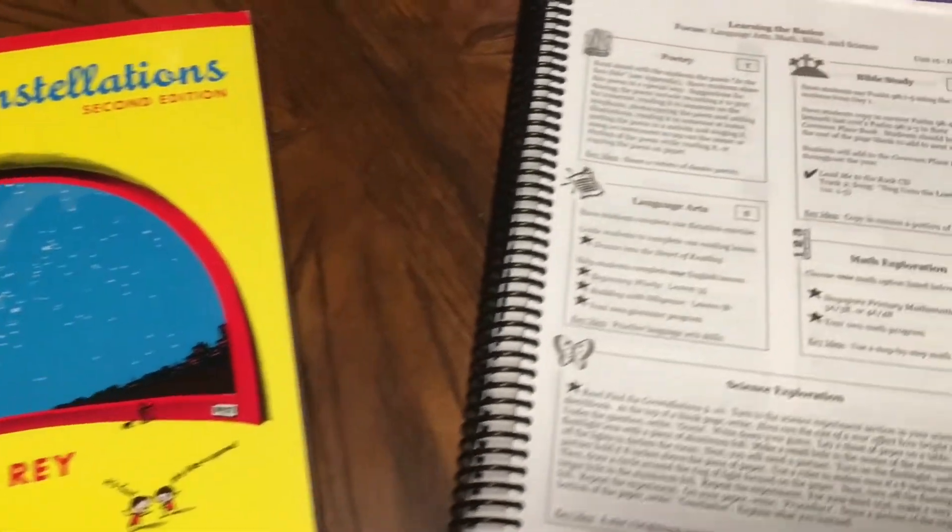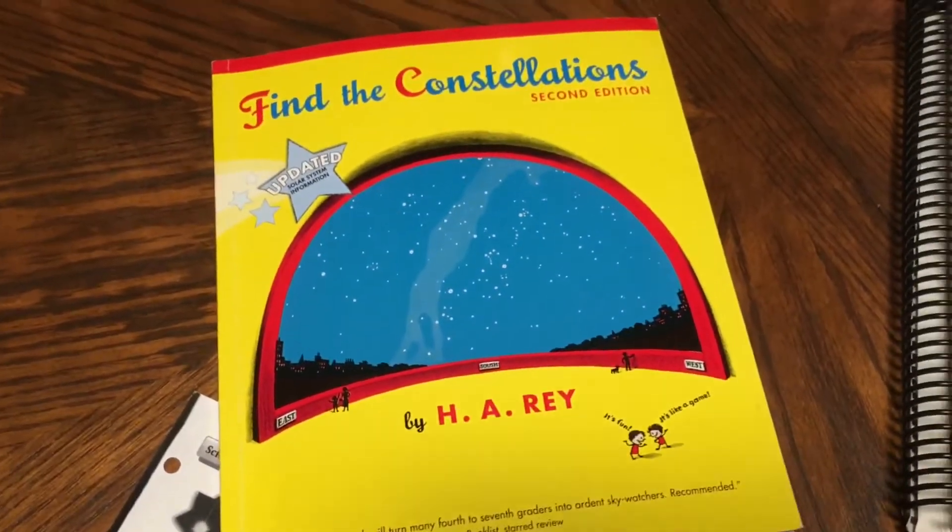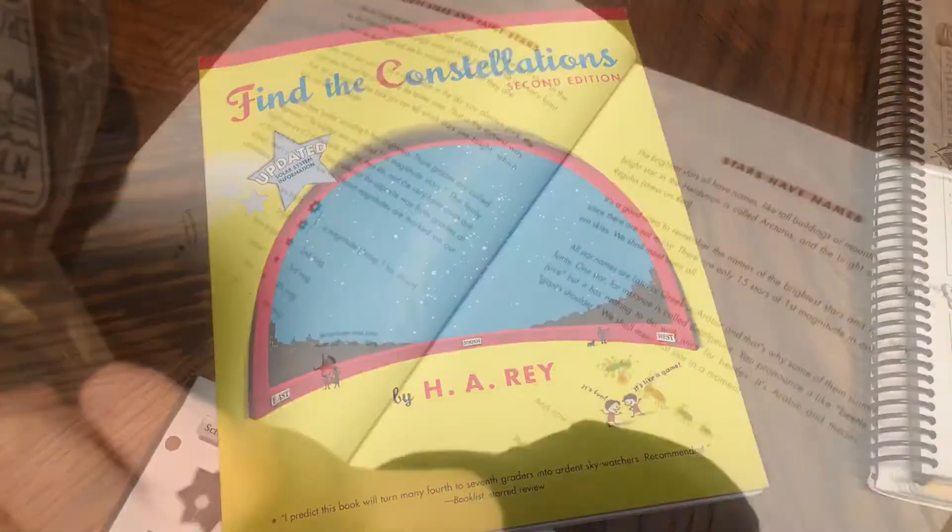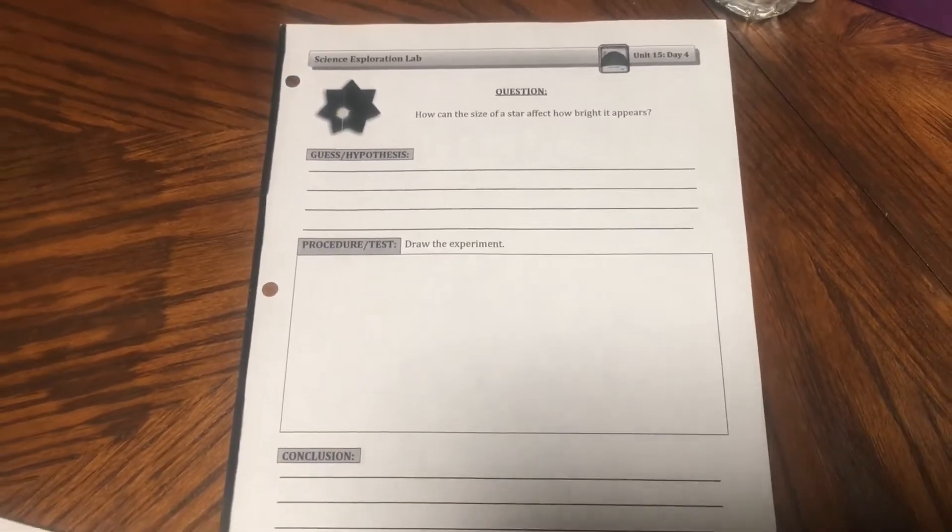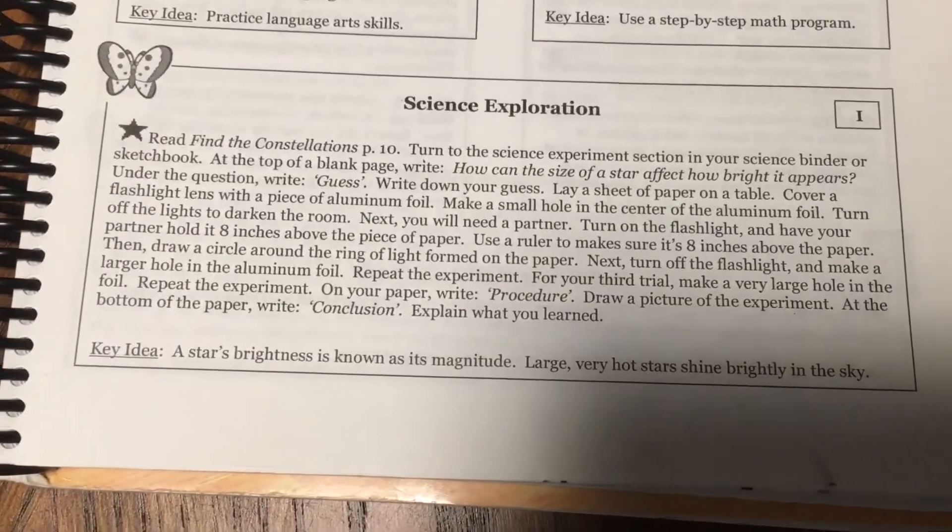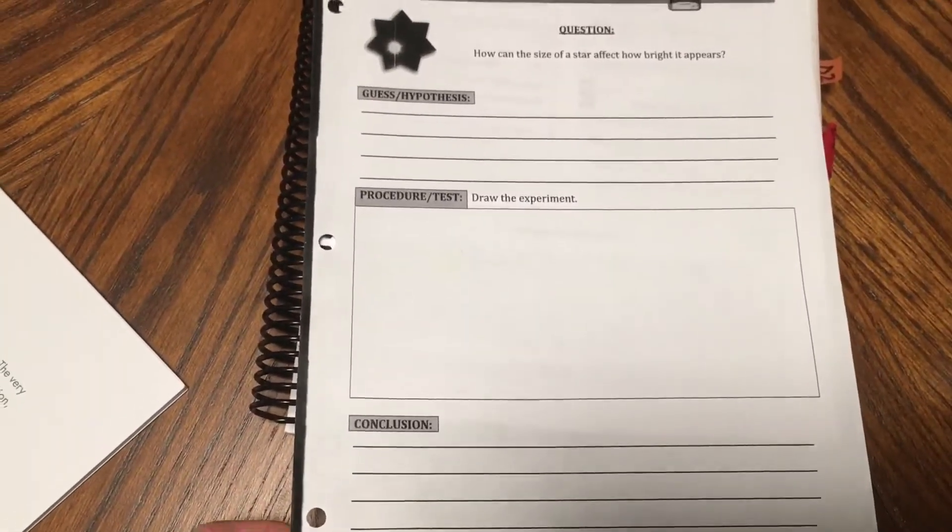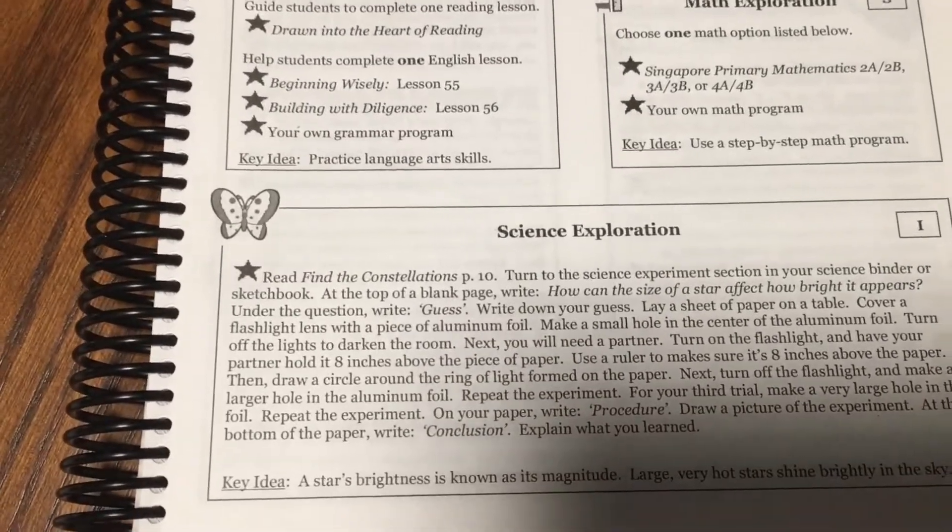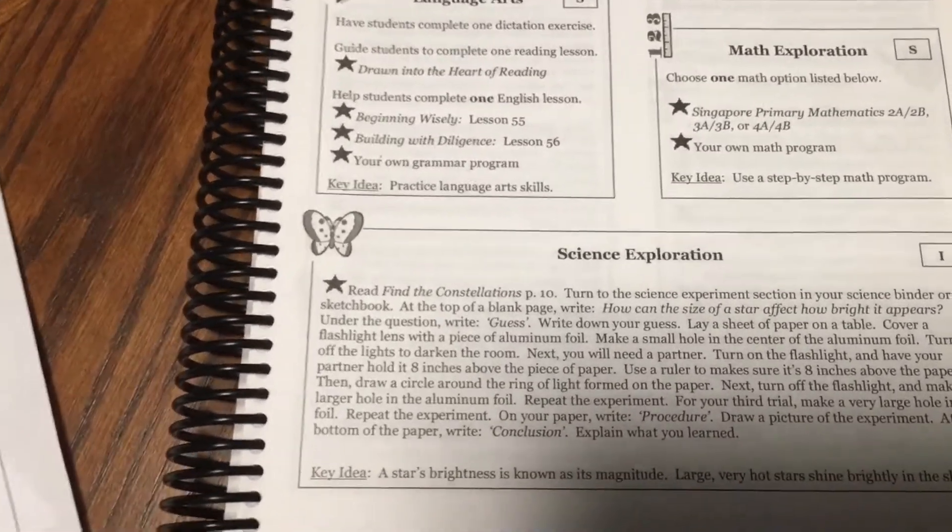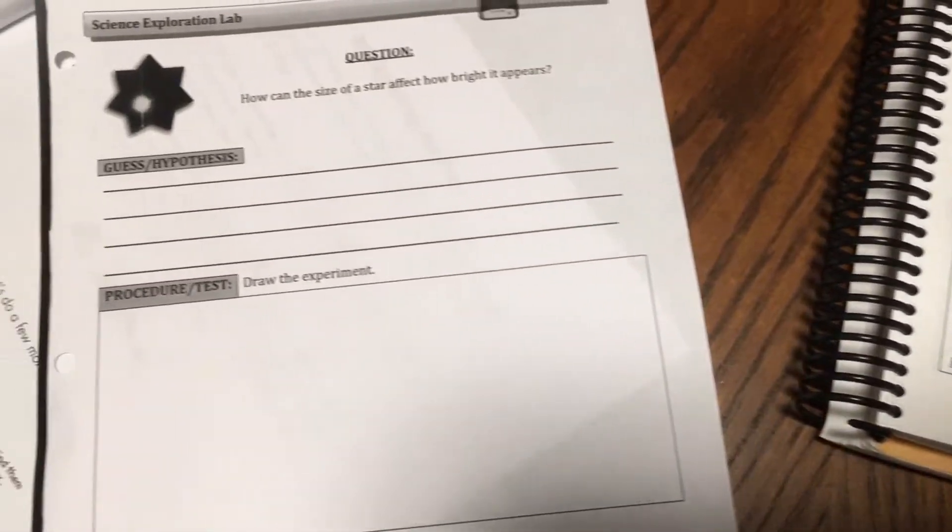For our Preparing Hearts for His Glory, we are in Unit 15 and Day 4, working on an experiment. This is the book we're using, Find the Constellations. Here's the experiment page that we're going to work on today. Our science experiment today says turn to the science experiment section in your sketchbook. Now we have printed these off, so this is the page he's going to look at. The first question is: how can the size of a star affect how bright it appears? And then it wants you to do a hypothesis or a guess.